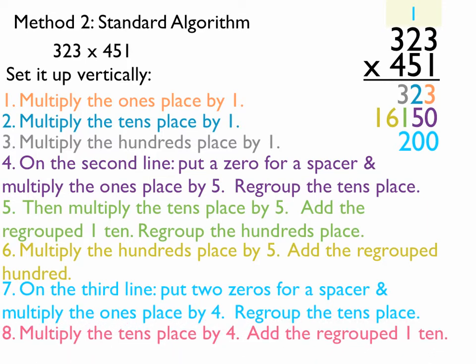Now, next step after that is multiply the tens place by 4. So, it's going to be 4 times 2 is 8. Plus that 1 will make 9.